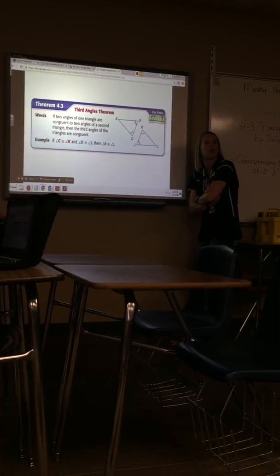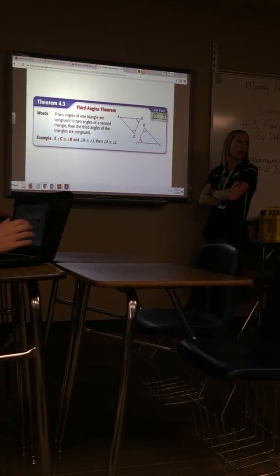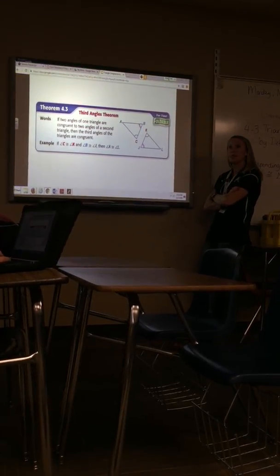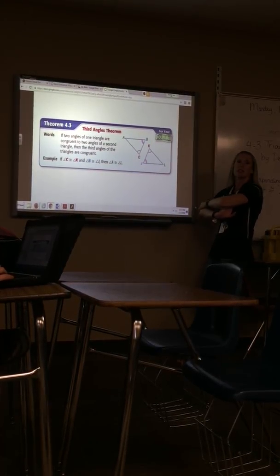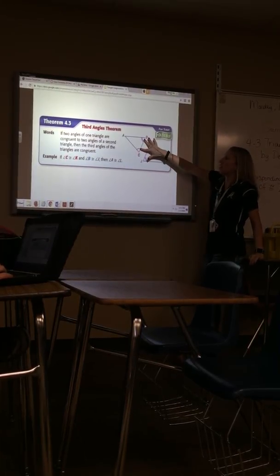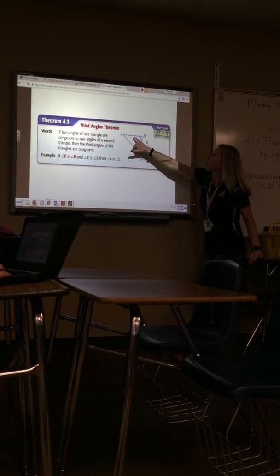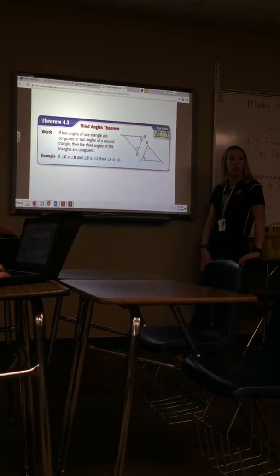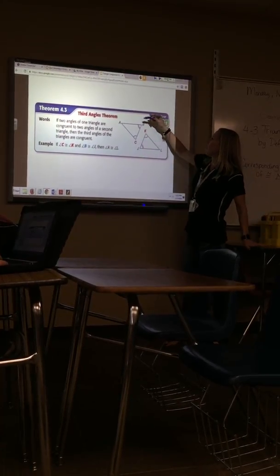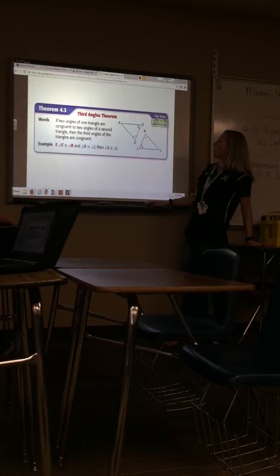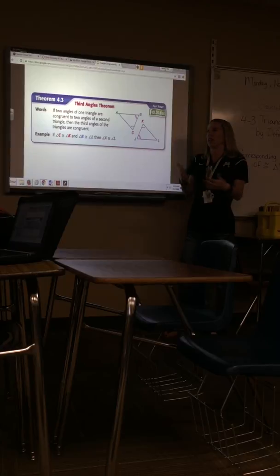Third angles theorem — you're going to have some proofs on your assignment. If two angles in one triangle equal two angles in another, the third angles have to equal each other. Why? Because all three angles in a triangle add to 180. If these two equal these two, the only option is for the third angles to equal each other.